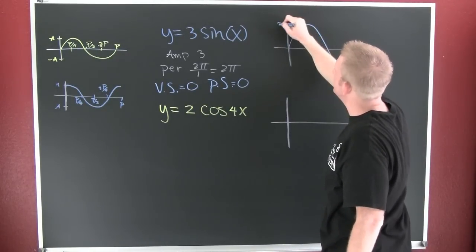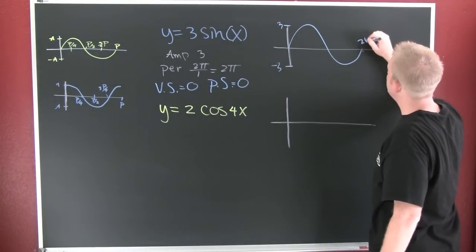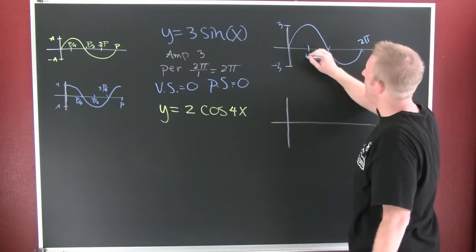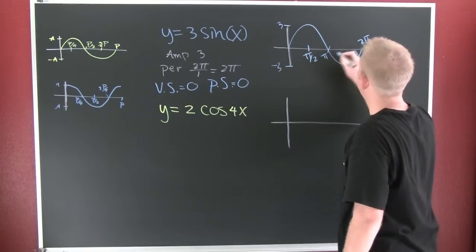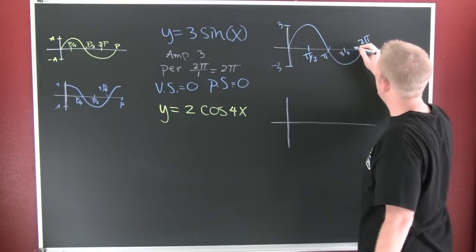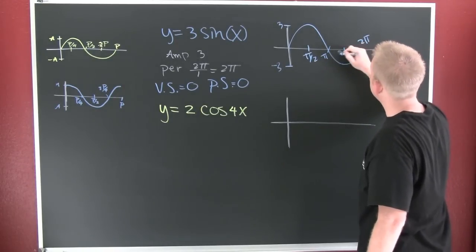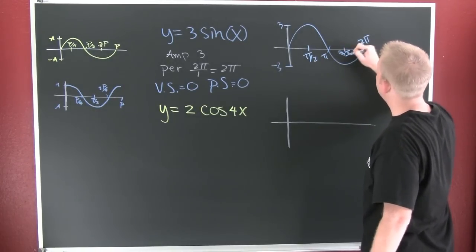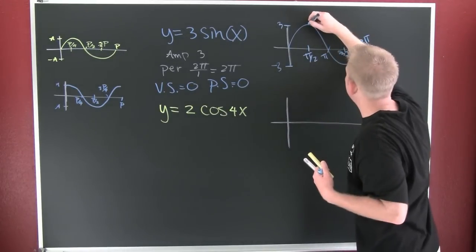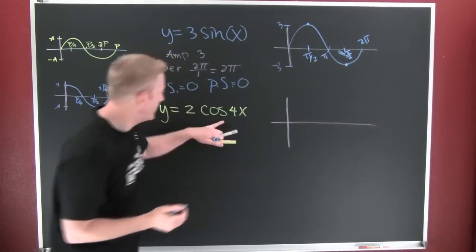Now label it. The amplitude is three, and that makes the minimum minus three. My period is 2π. Half that is π. Half that is π over 2. This one and that one is going to be 3π over 2. And you're done. That's the high point, the low point, the axes.